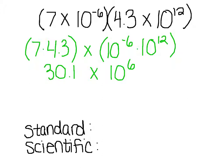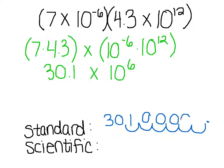So we're going to put it in standard notation first. It's a very large number, so my decimal point moves to the right 6 spots: 1, 2, 3, 4, 5, 6. That's where my new decimal spot is, so I fill in with zeros and put in proper commas after every 3 digits so I can read the number properly. My answer is 30,100,000.